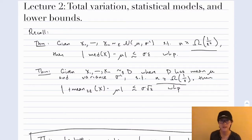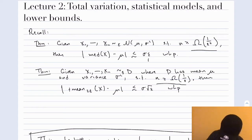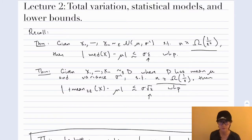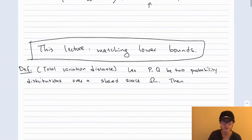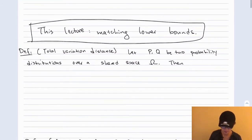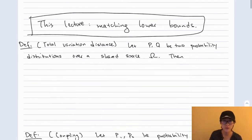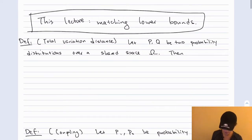So in this class, our goal will be to show that these scalings with epsilon — particularly linear in epsilon in one case and root epsilon in the other — are optimal for both of these problems. So we will show matching lower bounds. And to do so, we will have to introduce some important statistical notions.